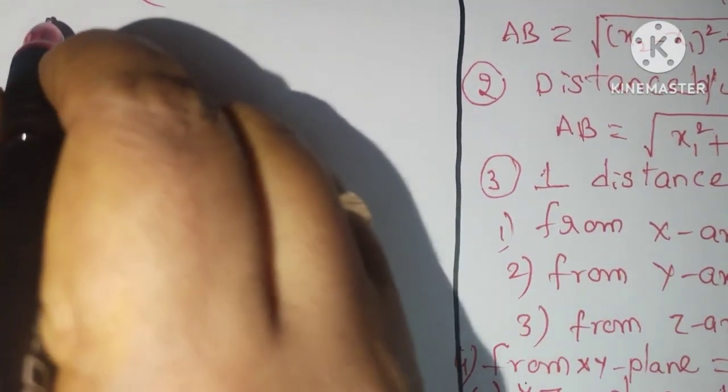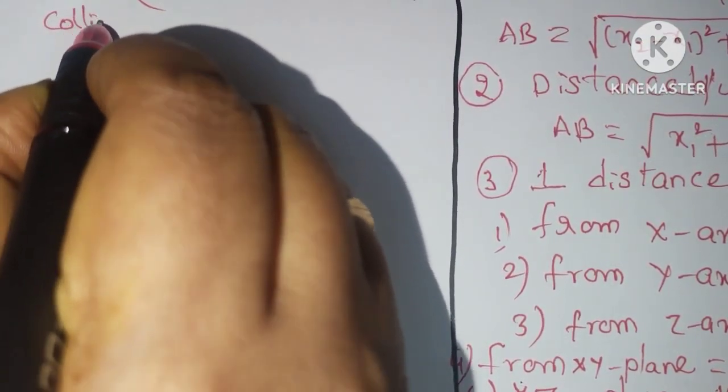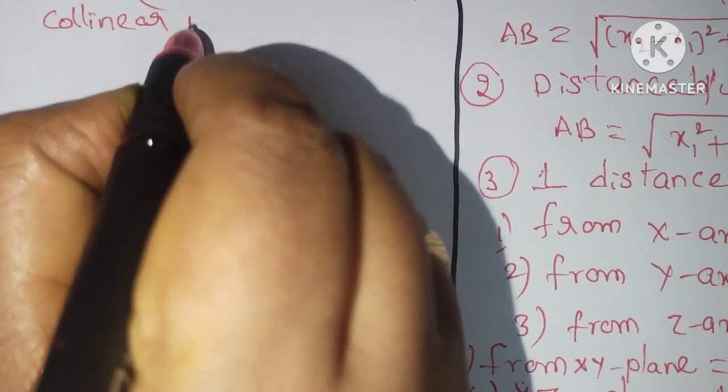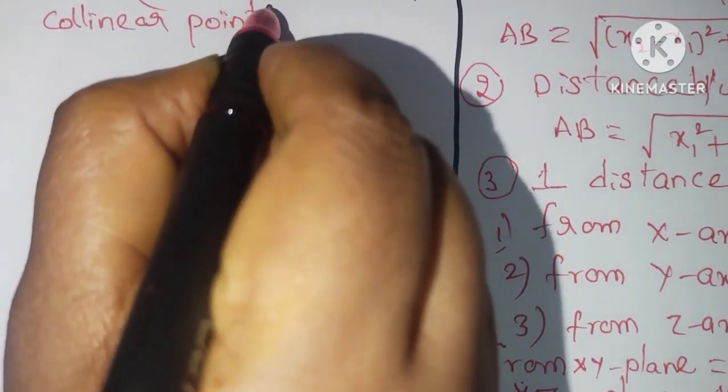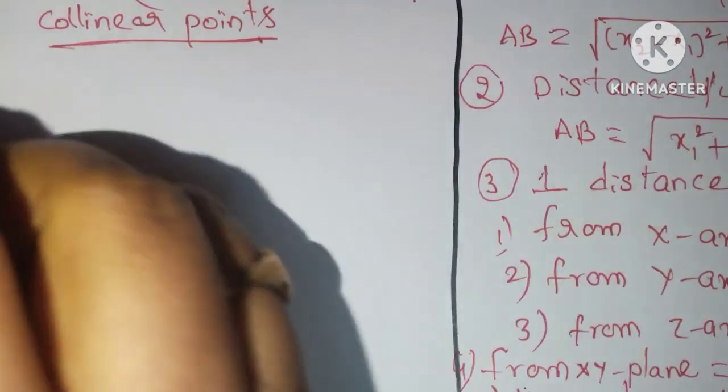The next formula is collinear points. This is the next formula.